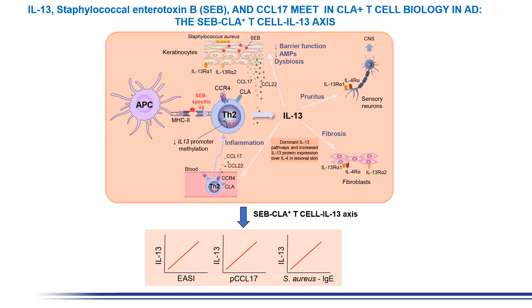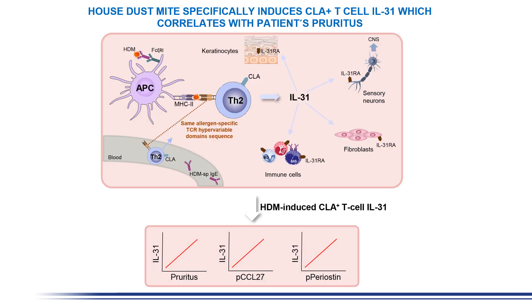For instance, Staphylococcus aureus, IL-13, and CLA are closely related in atopic dermatitis, since the production of IL-13 by the superantigen interaction via the CLA-positive T-cell axis correlates with patient severity, plasma levels of CCL-17, and also with plasma levels of IgE to Staphylococcus aureus.